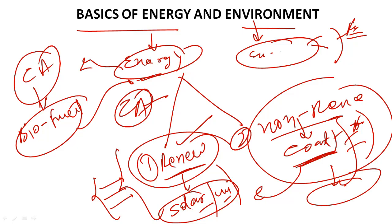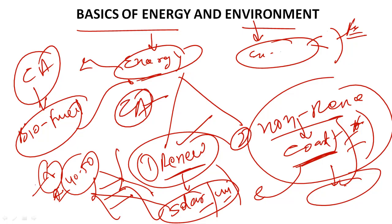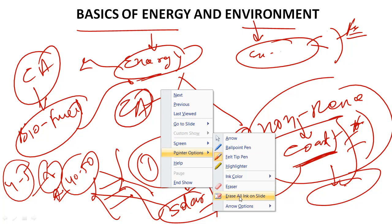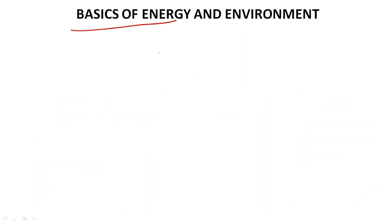Fossil fuels like coal and diesel are going to be limited, that's why we are moving to renewable energy sources. In future, 40 to 50 percent of energy will be led by solar energy, but the biggest problems are solar energy's high initial cost and high PV cell cost — setting up a solar plant for your home requires four to five lakh rupees. In future, this cost will reduce and efficiency will improve. Other sources like wind, tidal, and geothermal energy are also part of your energy topics.